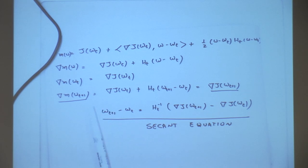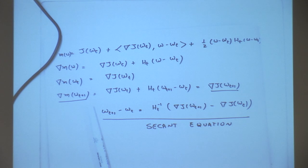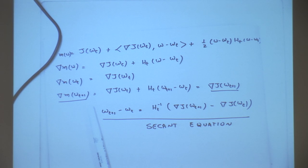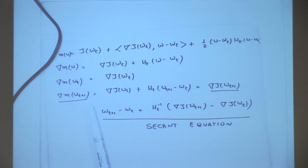What BFGS does is: find for me a new matrix B — update my model of the inverse Hessian — but do not go too far away from where I was. How do you measure 'too far away'? This is where the secret sauce comes in: you use a weighted norm. This weighted norm depends on the average Hessian on the path between Wt+1 and Wt — I will spare you the details for now.